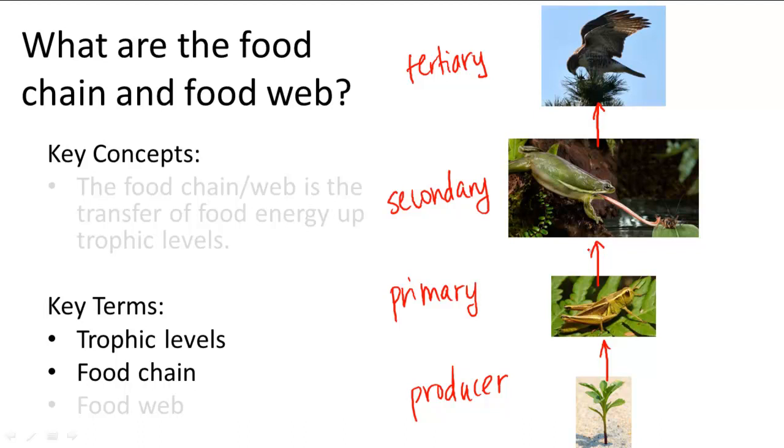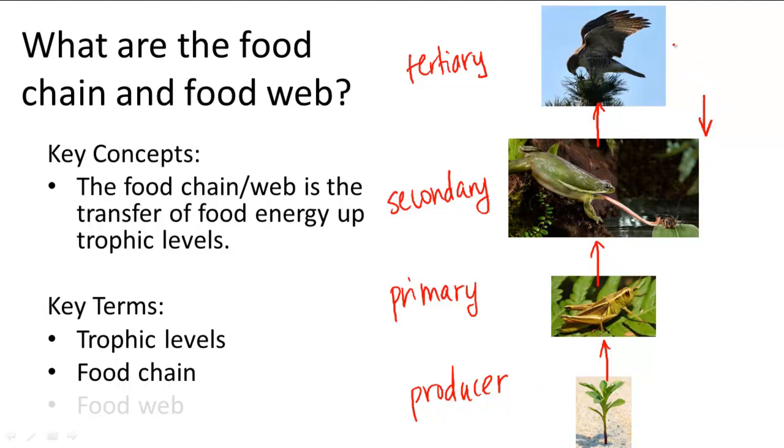So notice how I'm drawing the arrows up in this food chain and not down. The arrows represent energy flow. So the energy is flowing from the plant to the grasshopper, the grasshopper to the frog, the frog to the eagle because essentially the food chain is showing the transfer of food energy up the trophic levels. A common misconception is that the arrows are supposed to be drawn down because the eagle eats the frog, eats the grasshopper, eats the plant. But it's actually the flow of energy up.